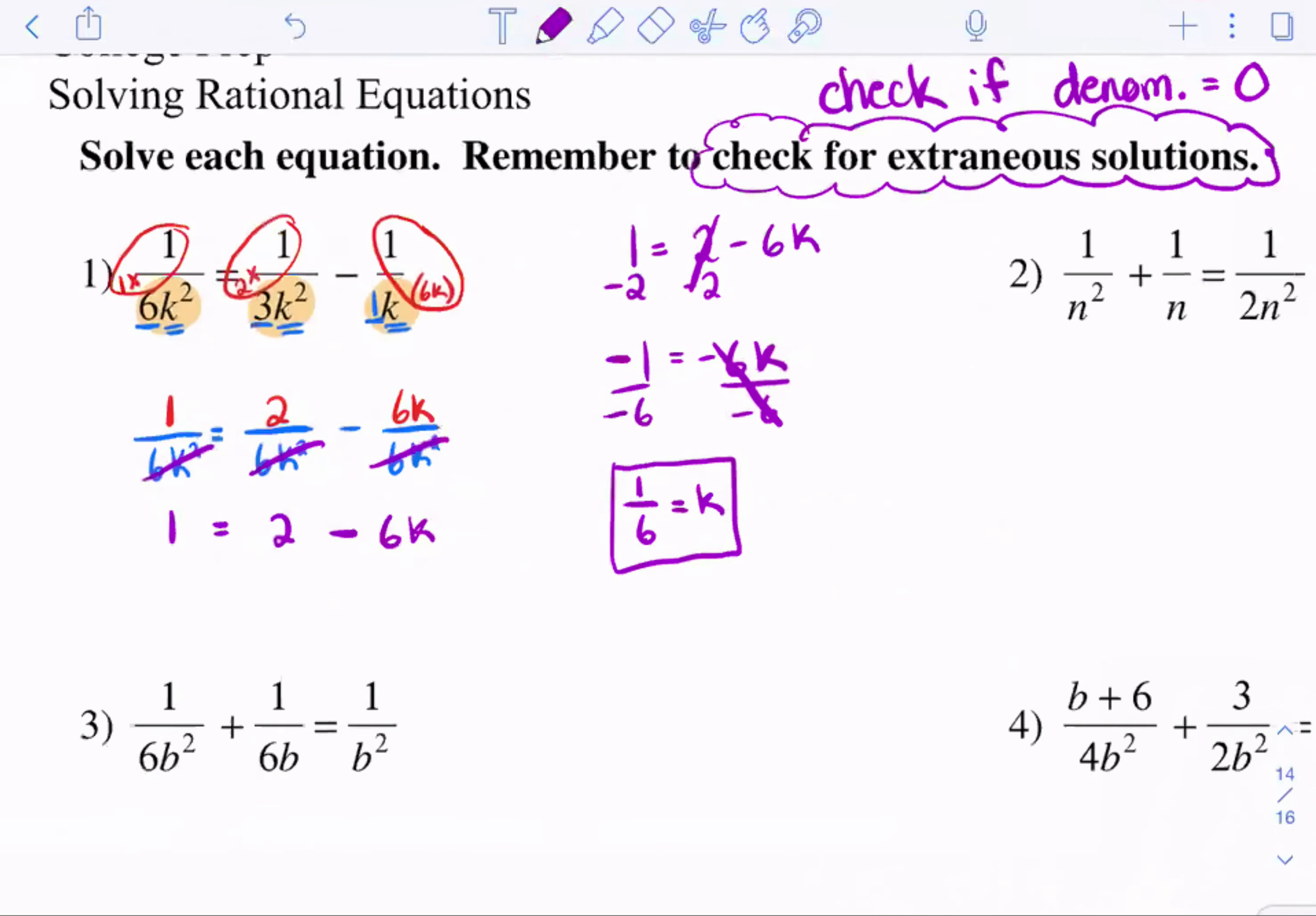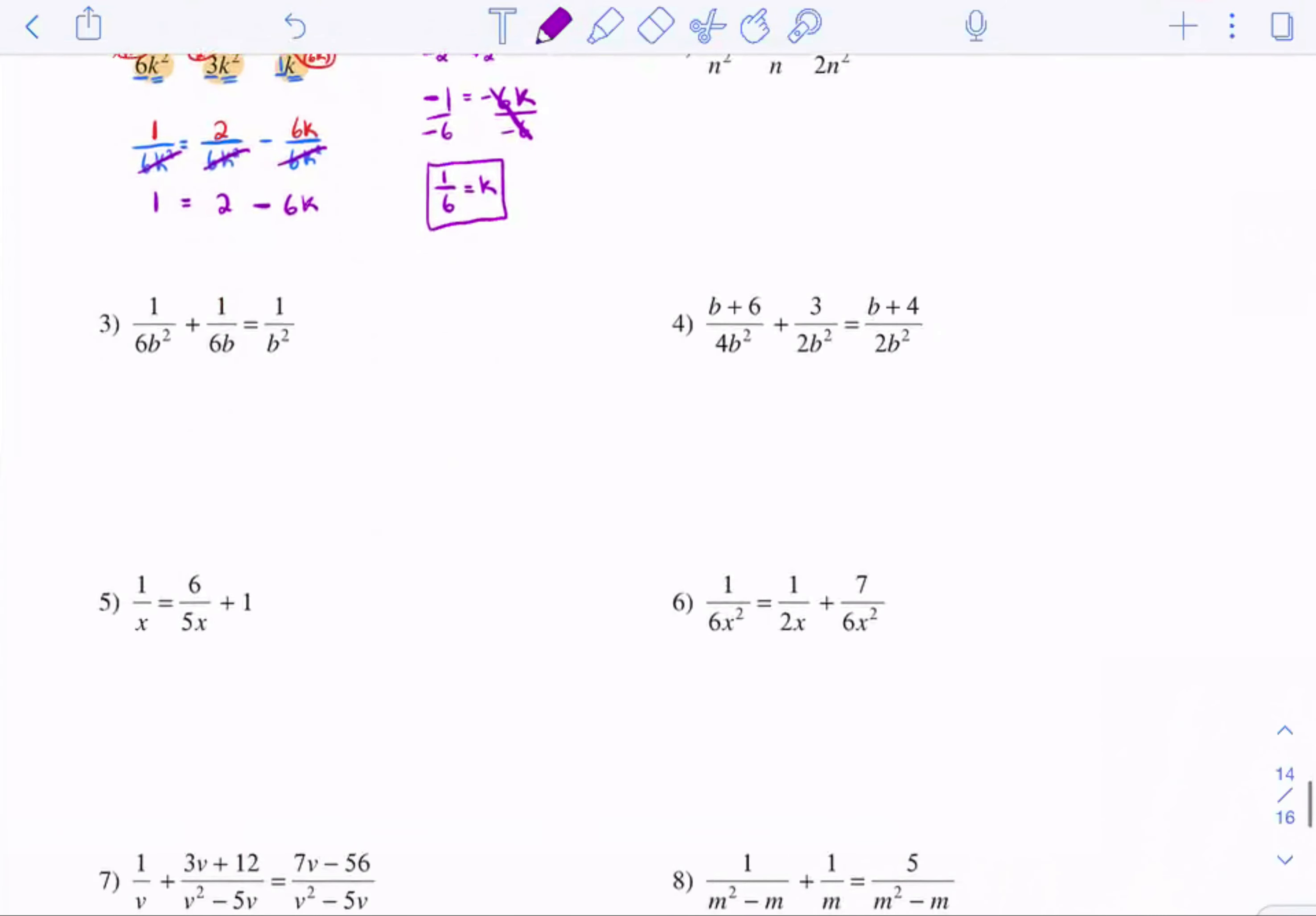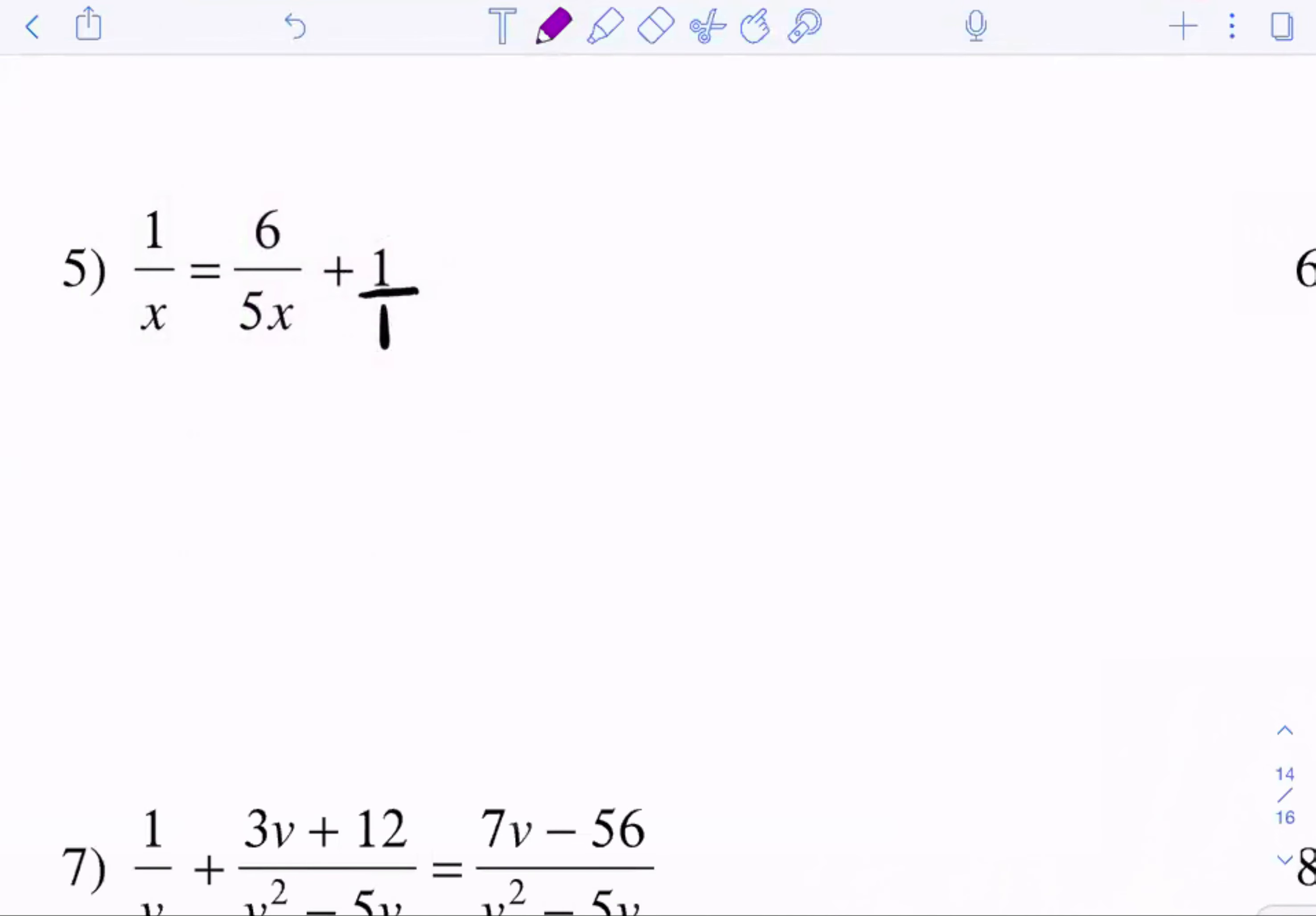So let's try another example. Another example would be number five. If you notice, not all of them are fractions. So let's change it. So the last one is over one. Now, if I want them to have a common denominator, I need to focus on the x, the 5x, and the 1. You have to ask yourself, what can I make all of them be as a common denominator? So here I have the number one, I have the number five, and I have the number one.